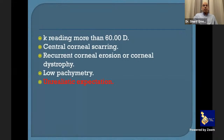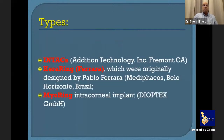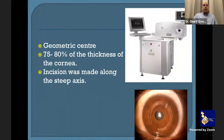The most important contraindication is unrealistic expectation. If the patient thinks he can see 6/6 after ring insertion, don't proceed. The most commonly used intracorneal rings are Intacs, Keraring (or Ferrara ring), and Neo ring — but most of us use Intacs or the Keraring and Ferrara ring.